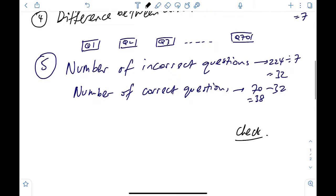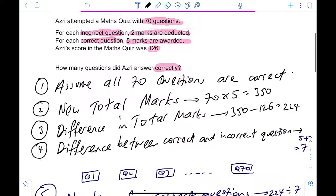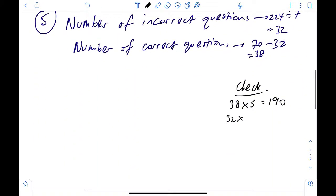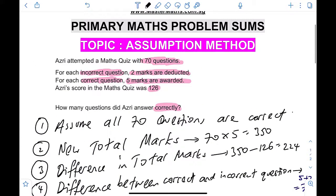So let's do a quick check. If you get 38 questions correct, you will be getting 38 times 5. 38 times 5 is 190. And if you get 32 questions wrong, each question you will deduct two marks. So let's see how many marks must you deduct away. 32 times 2 is 64. So you take 190 minus 64. Let's see whether we get this person's score or not. 190 minus 64. 126 is this person's actual marks.